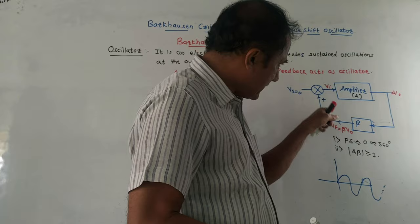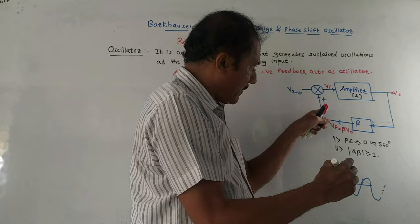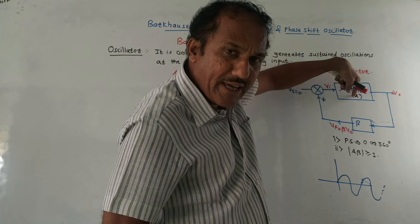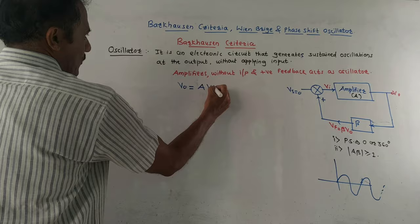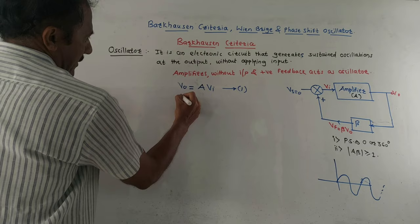Let us discuss the simplified block diagram of an oscillator. The input voltage Vs is zero. There is a mixer device with a plus sign, indicating positive feedback. Beta is the gain of the feedback element. The amplifier has open loop gain A, and V0 is the output voltage. We can write the output voltage equation as V0 = A × Vi, where A is the open loop gain. This is equation number one.